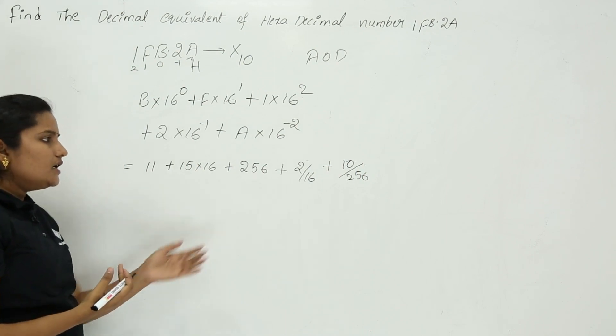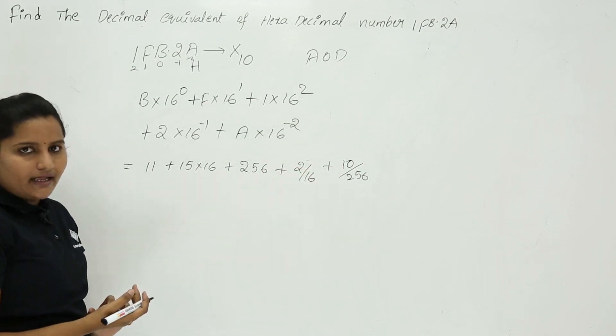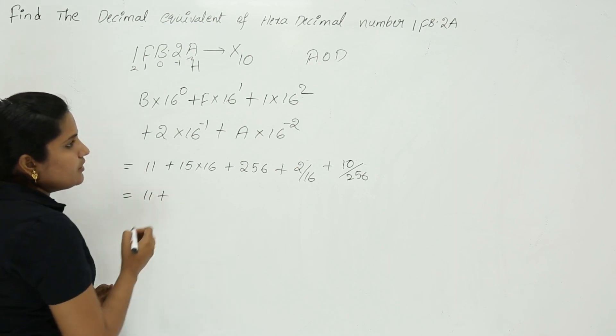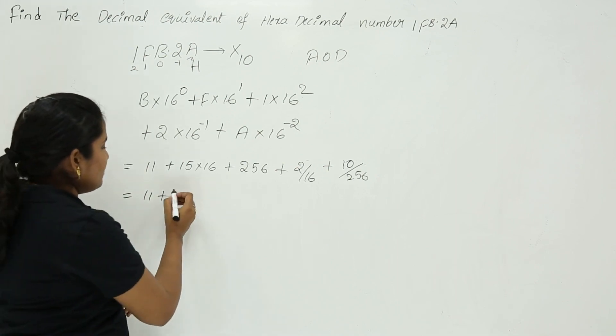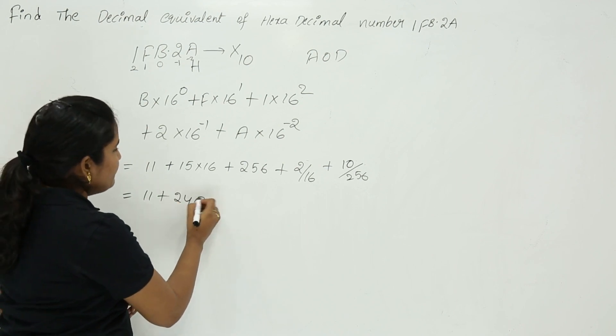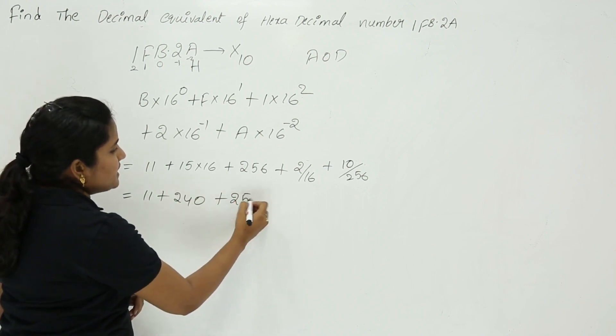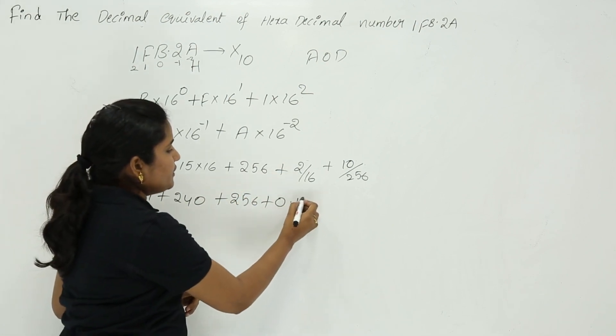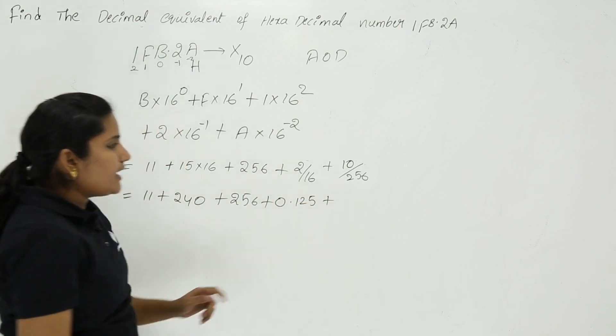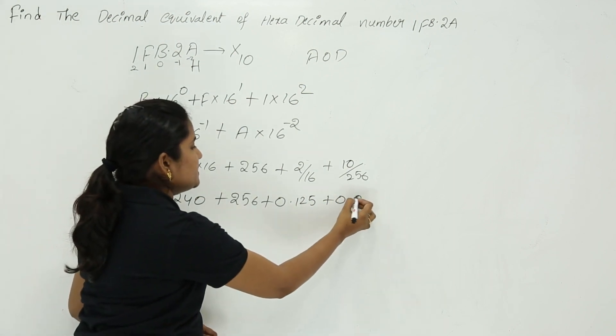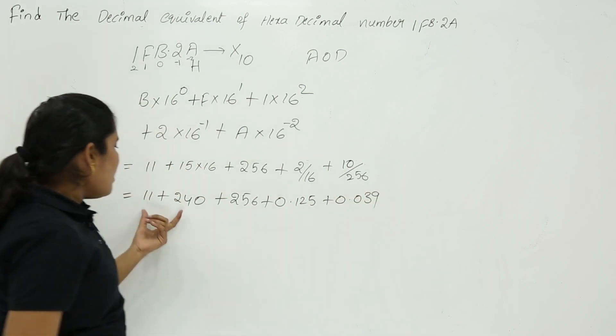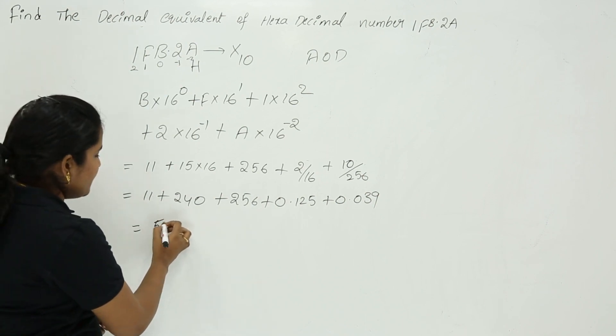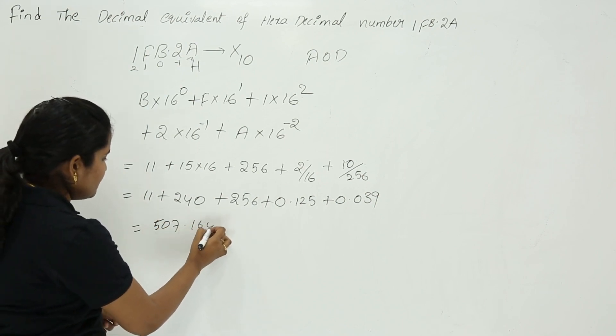You know that A is equal to 10 in hexadecimal. So this is equal to 11 plus 15 into 16 equals 240, plus 256, plus 2 by 16 value is 0.125, plus 10 by 256 value is nearly 0.039. After summing all these values you are going to get 507.164.